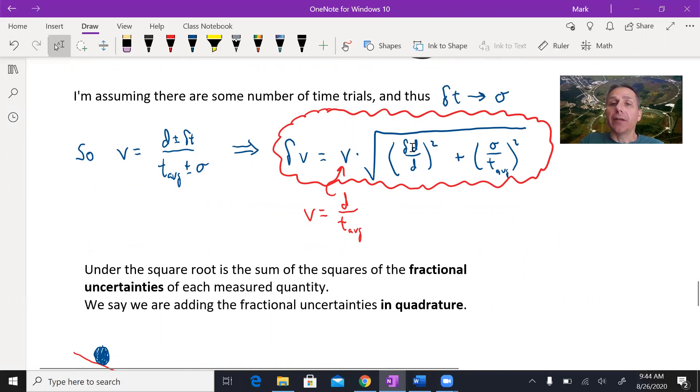On the square root here, notice here's the delta d and here's the uncertainty in time, which if you did trials, technically would be your standard deviation of the time. That's something we can actually calculate. These are called fractional uncertainties. What percentage, what fraction of the distance is the uncertainty, the plus or minus in it?